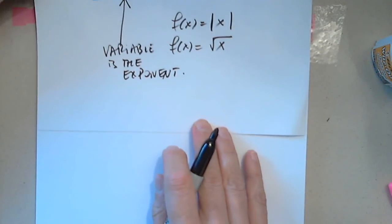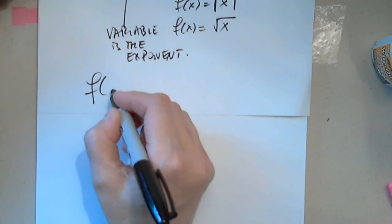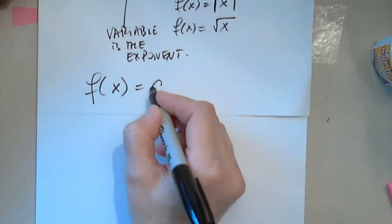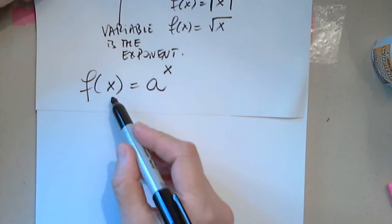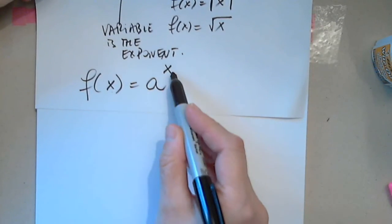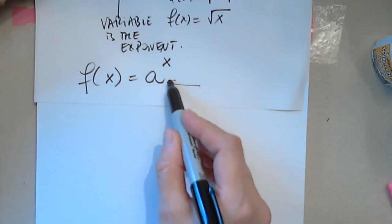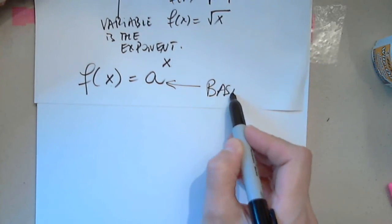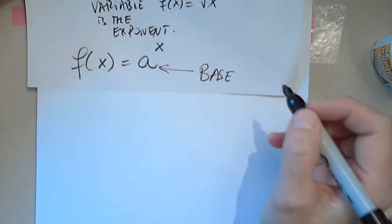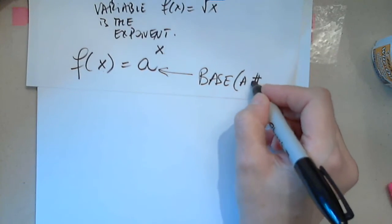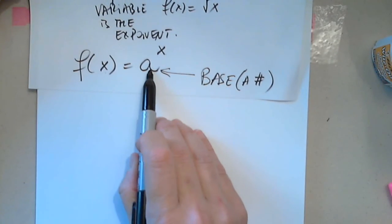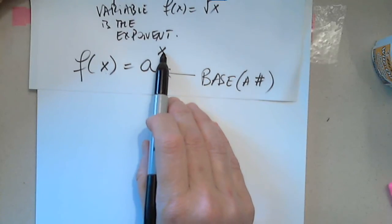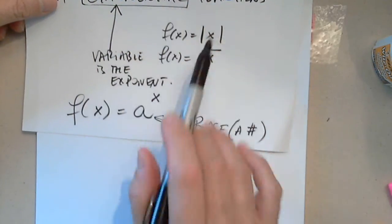So how will it look like? As you see, x is the variable. This is called the base of the exponential function — this is a number, given or not, just a number. The variable is the exponent. So that's the exponential function.